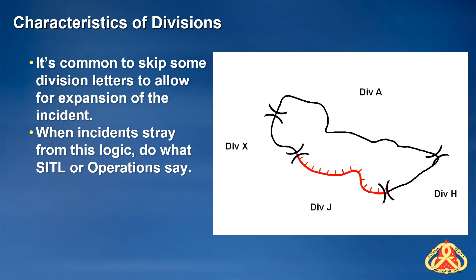You'll notice on this map that some letters have been skipped. As a fire grows in size, this allows for divisions to be added anywhere on the fire without losing the alphabetical order as you move clockwise around the fire. Because divisions are assigned by operations, you should always label them as they are given to you, even if they do not adhere to this method.